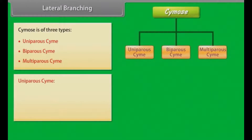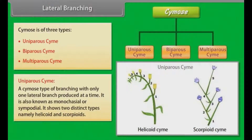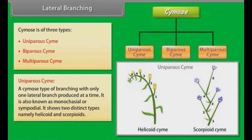Uniparis cymose is a cymose type of branching with only one lateral branch produced at a time. It is known as monocasial or sympodial. It shows two distinct types, namely helicoid and scorpioid.